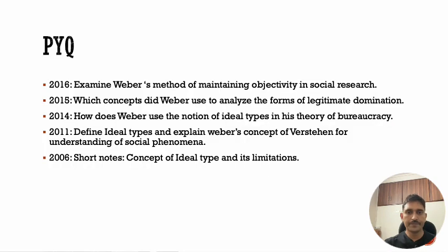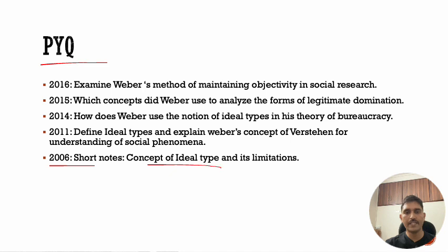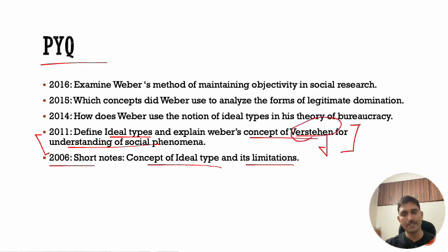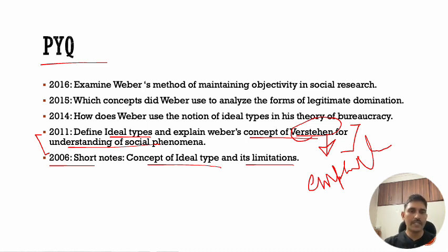These are the previous year questions regarding ideal types which UPSC has already asked. In 2006, they asked a short note on the concept of ideal type and its limitations. Then in 2011, they asked to define ideal types and explain Weber's concept of verstehen for understanding of social phenomena. Verstehen is basically the empathetic understanding of any social reality.